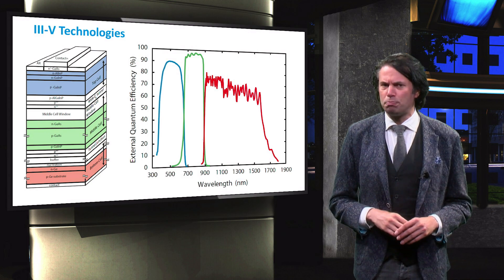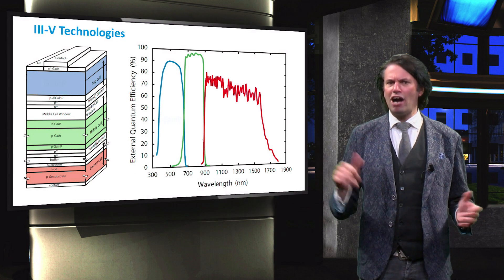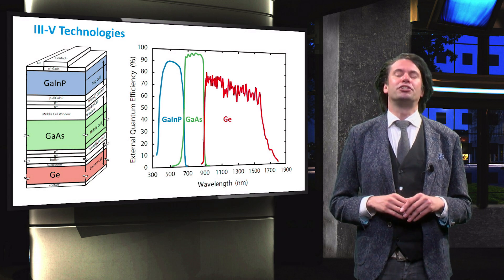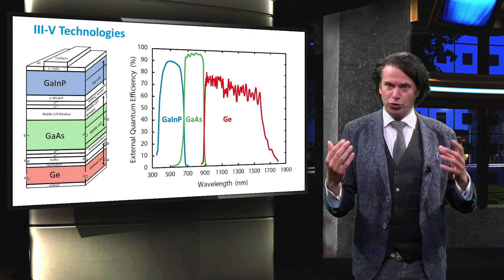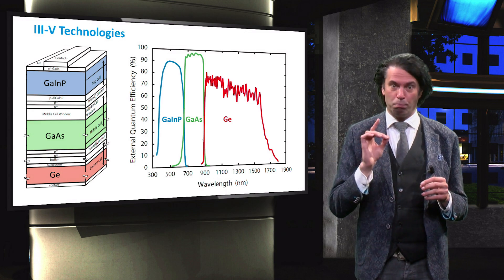Let's take a look at the spectral utilization of this device. This graph shows the external quantum efficiency of a multi-junction device. The shape of the spectral utilization of all the curves approaches the shape of block functions. The block function is in fact the most ideal shape for an external quantum efficiency. If the EQE of the top cell resembles a block, it means that all the photons in the high energy, low wavelength range are absorbed by the top cell. If the EQE of the middle cell would significantly overlap with the top cell, then high energy photons are absorbed by the middle cell as well. The middle cell has a lower band gap and can therefore only utilize a smaller fraction of the photon energy.